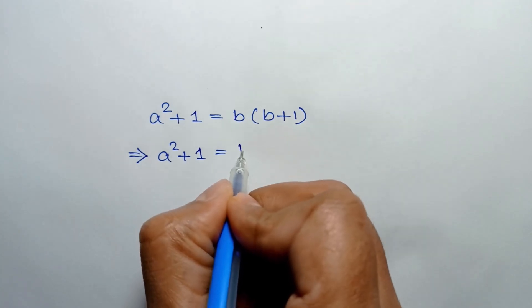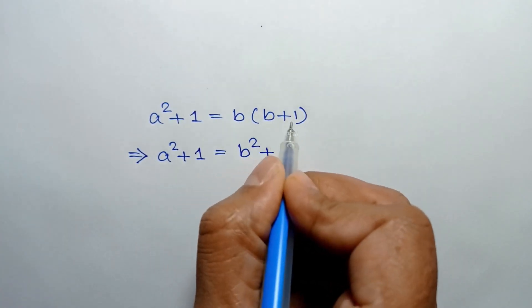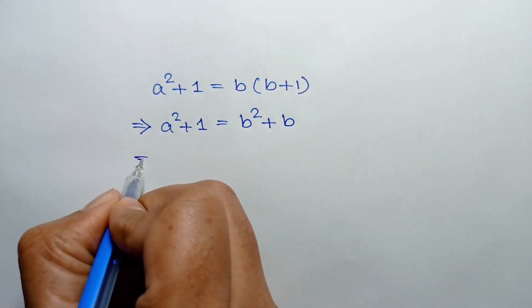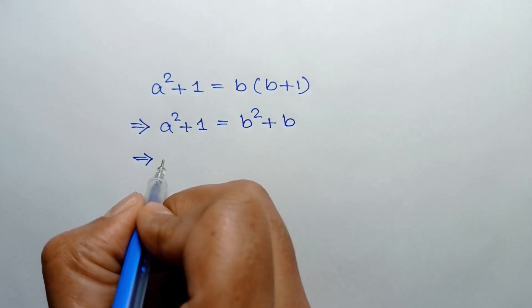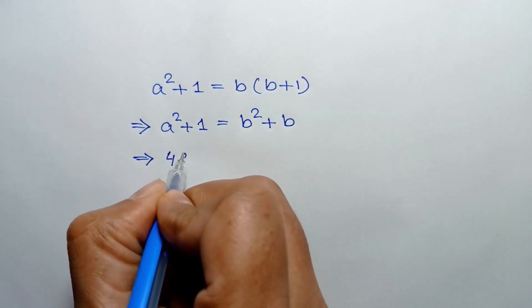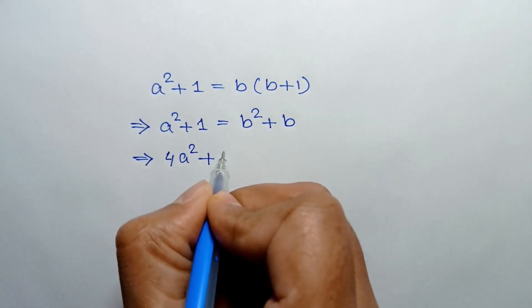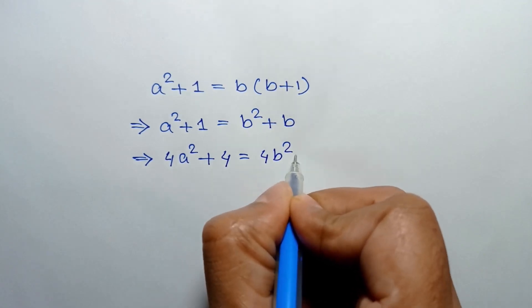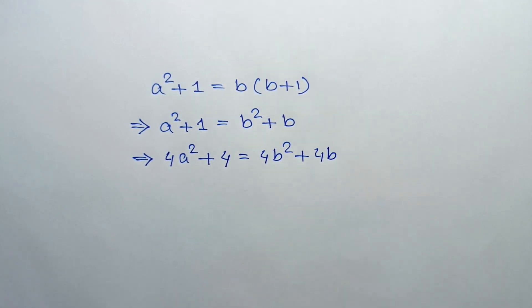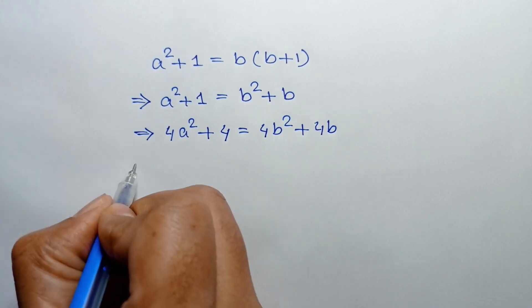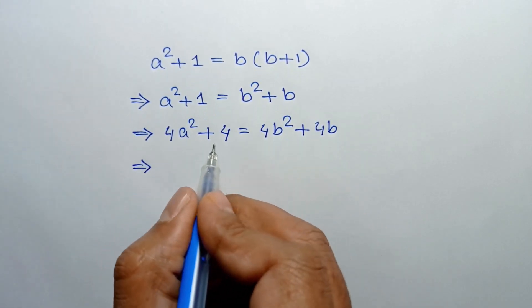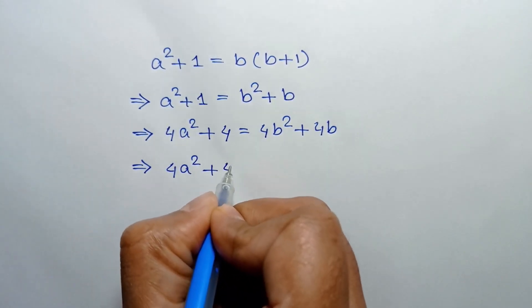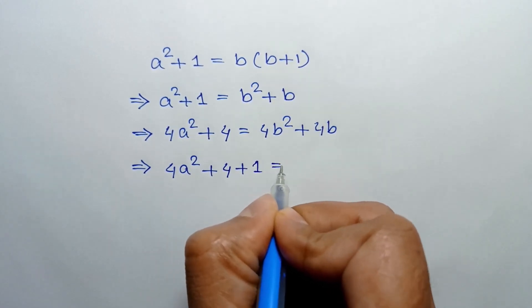Multiplying both sides by 4 we can write 4a² + 4 = 4b² + 4b. Adding 1 to both sides we can write 4a² + 4 + 1 = 4b² + 4b + 1.